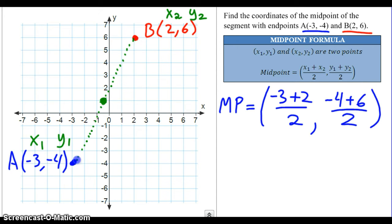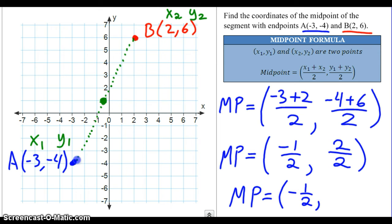And now we want to simplify. Make sure when you're simplifying this equation you simplify the numerator before you try dividing by 2. So negative 3 plus 2 we get negative 1 over 2, and negative 4 plus 6 that's positive 2 over 2. And we'll simplify just a little bit more: negative 1 half, or if you want to write negative 0.5, and 2 over 2 simplifies to just 1.